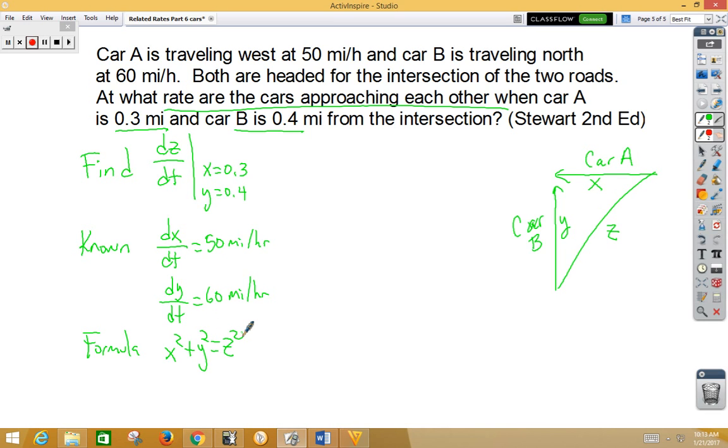Now what bothers some students is we have three variables. That's okay, because they gave us enough information to keep all three variables. The derivative of x squared is 2x dx/dt, the derivative of y squared is 2y dy/dt, and the derivative of z squared is 2z dz/dt.